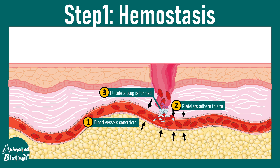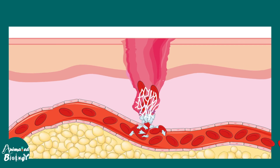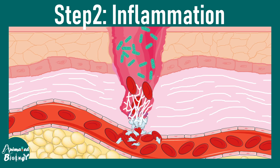Eventually a platelet plug is formed, followed by the fibrin mesh. The fibrin mesh and platelet plug together ensure that there is no more blood loss. This is the hemostasis phase, which simply means prevention of external blood flow.